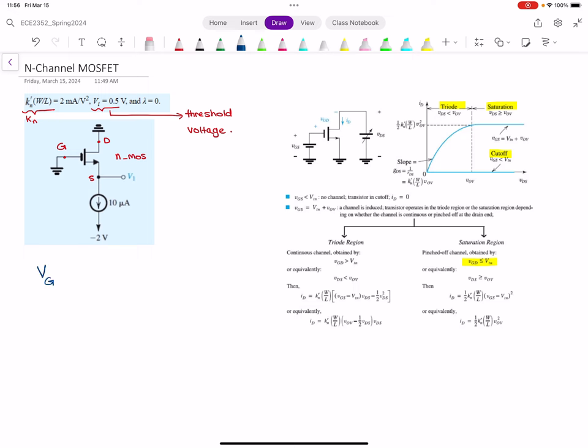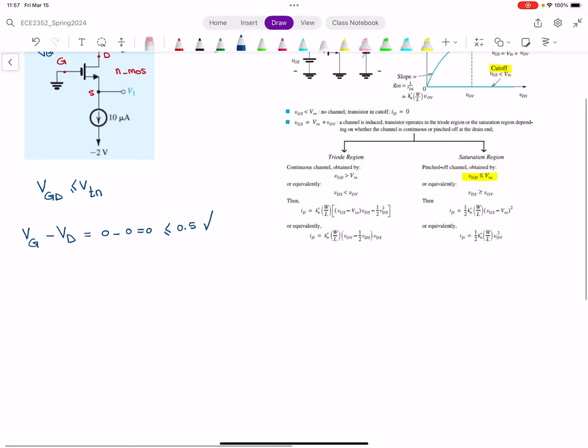We want to see if VGD is less than or equal to VTN. VGD equals VG minus VD. The gate is connected to ground, so VG equals 0. The drain is also connected to ground, so VD equals 0. That's 0 minus 0 equals 0. We want to know if 0 is less than or equal to the threshold voltage. Our threshold voltage is 0.5, so this condition is satisfied. Therefore, the transistor is operating in the saturation region.